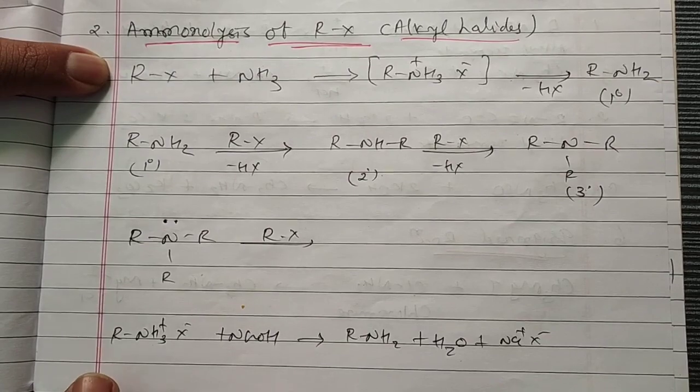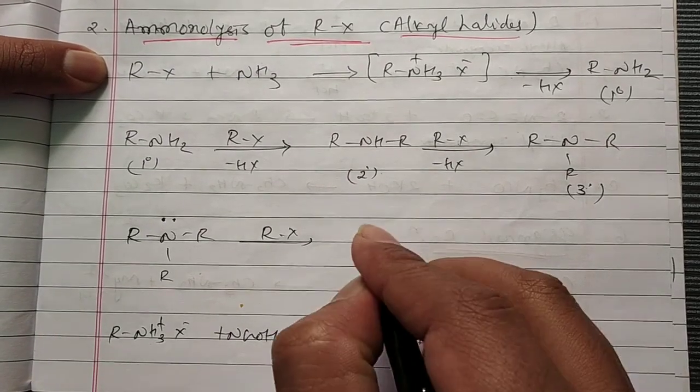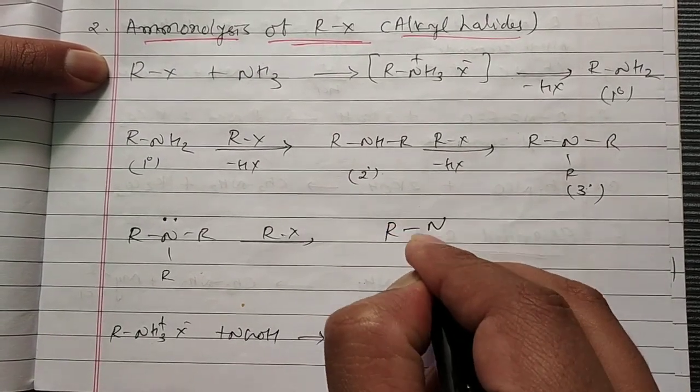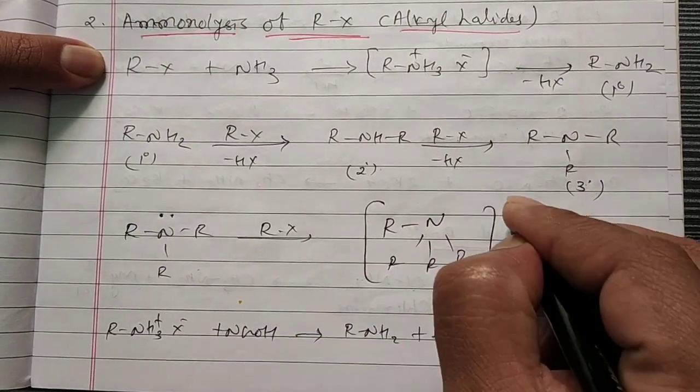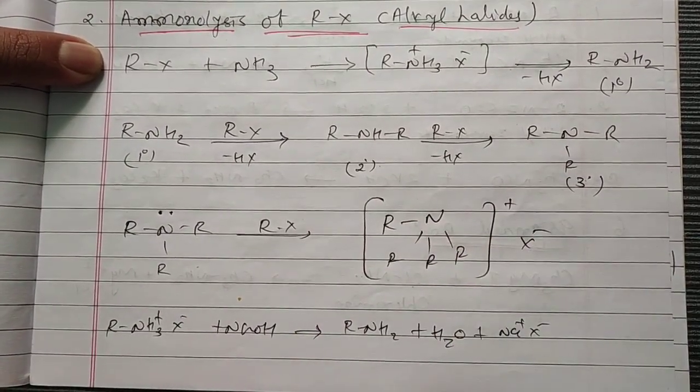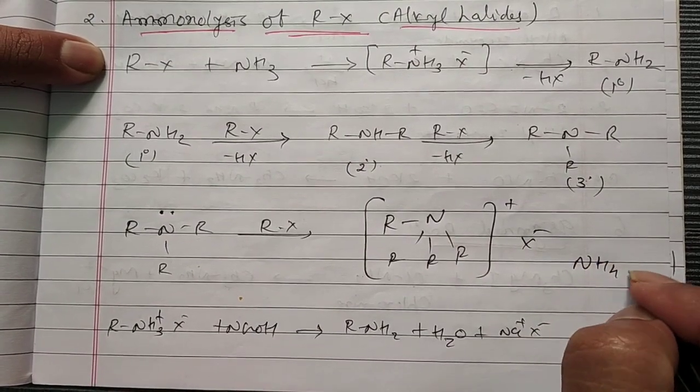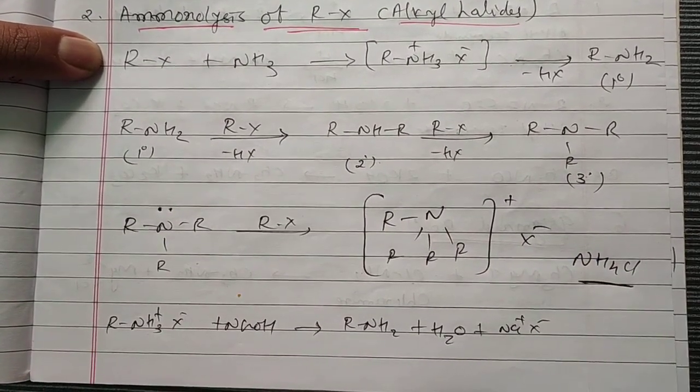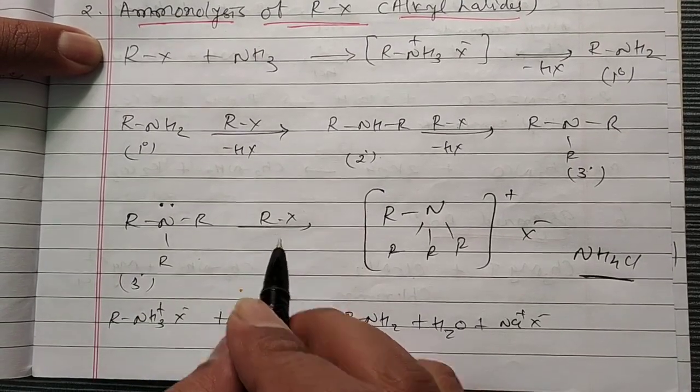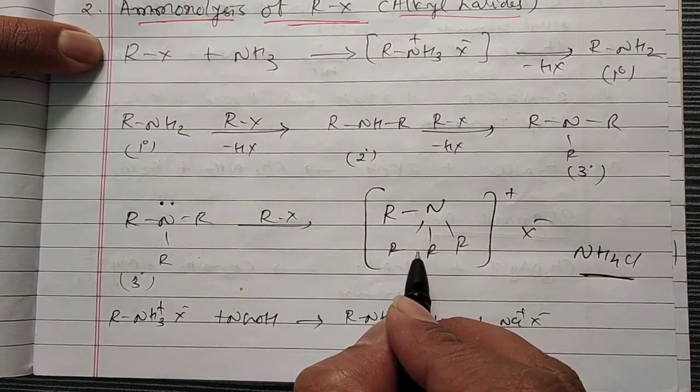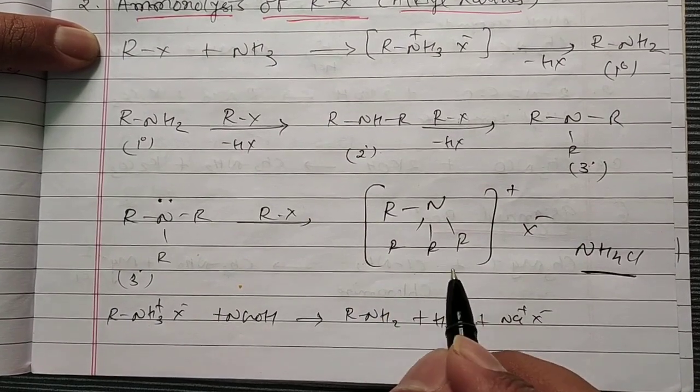So this is a special case for nitrogen only. They can convert it into quaternary ammonium salts. That is, best example in chemistry lab you must have seen NH4Cl. So yes, tertiary amine further undergoes Rx and converts into quaternary ammonium salts. So this is all about your ammonolysis.